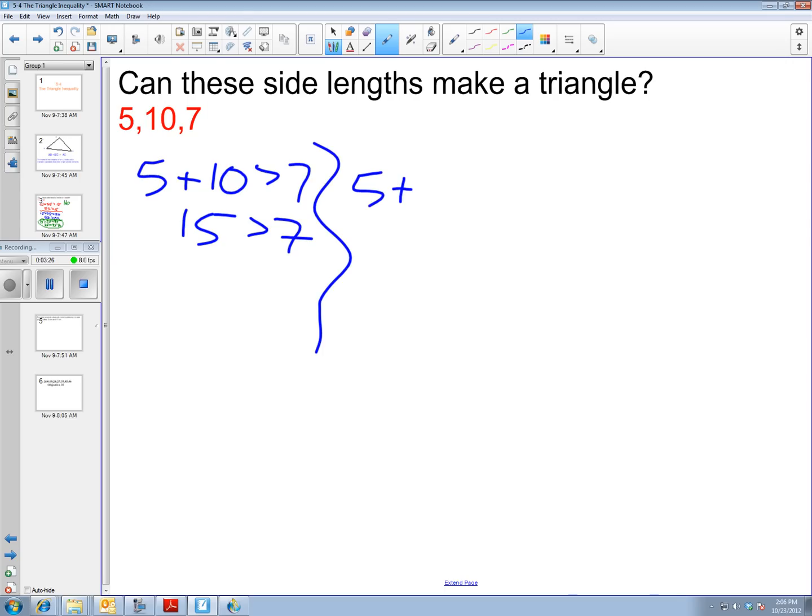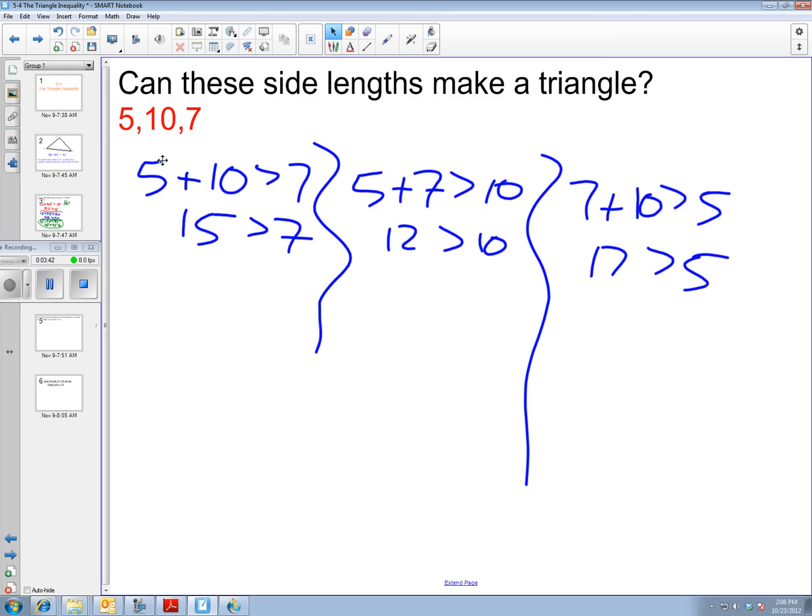5 plus 7. 5 plus 7 greater than 10. 12 greater than 10. That works. And lastly, 7 plus 10 greater than 5. 17 greater than 5. So, the answer here is yes. It does make a triangle.